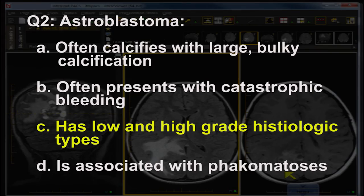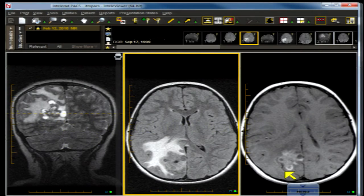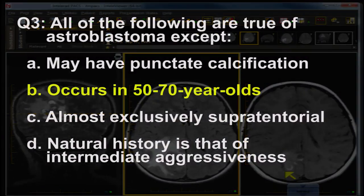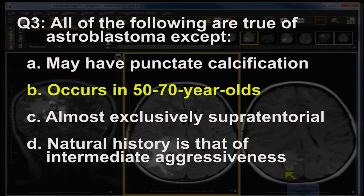Question 3 on this advanced case — all the following are true of astroblastoma except. The correct answer is B: it is not a lesion of older or middle-aged adults 50 to 70 years of age. It is a lesion of children and adolescents. The other choices are true: it may have punctate calcification, it is almost exclusively supratentorial — I've never seen one infratentorial — and the natural history is that of an intermediate aggressive lesion.